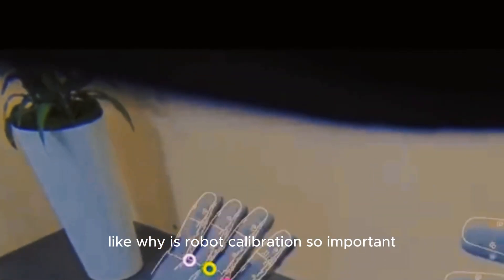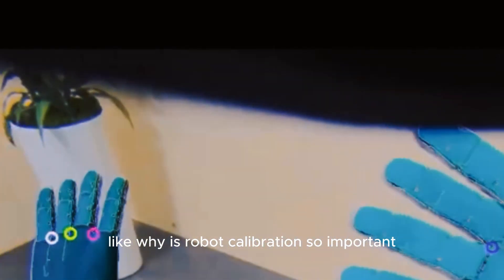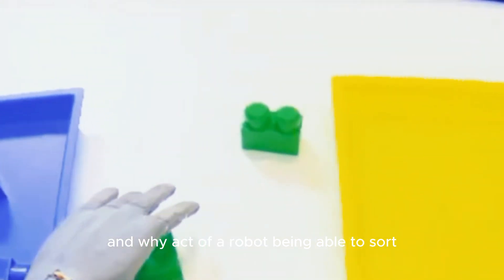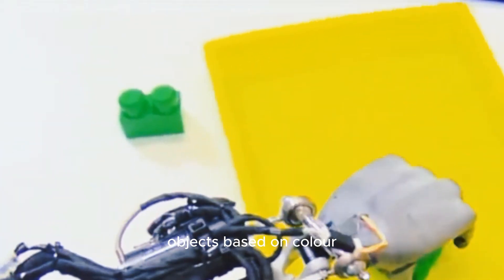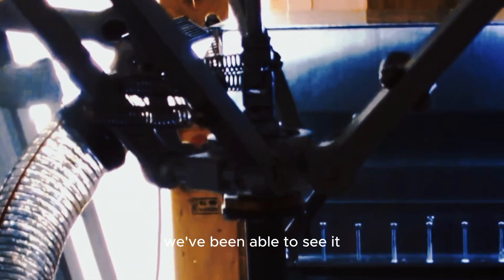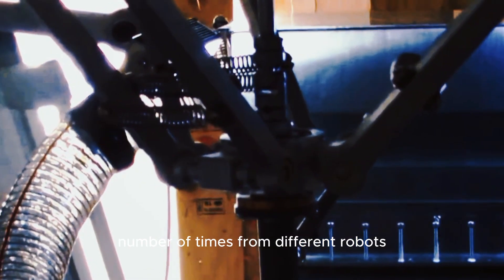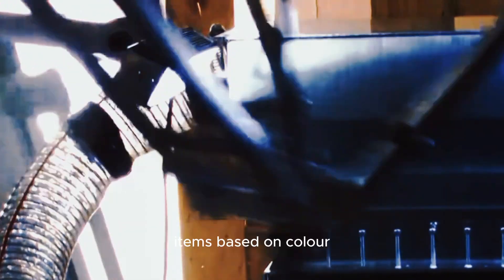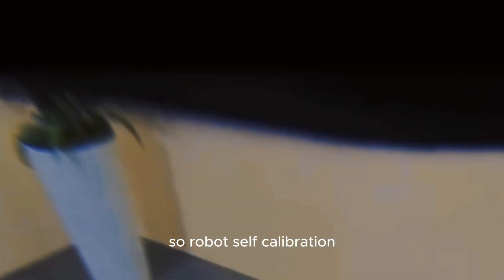Today, like why is robot calibration so important and why is that act of a robot being able to sort objects based on color also so important. We've been able to see it a number of times from different robots, different companies releasing their robots being able to sort items based on color, but why is it so important?